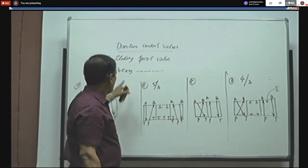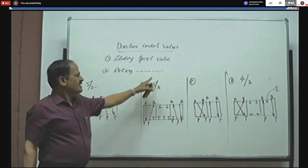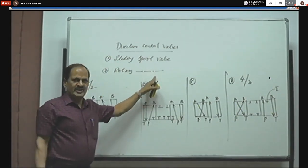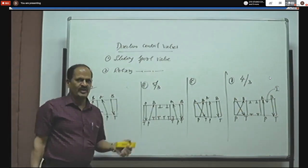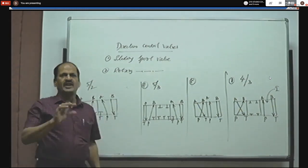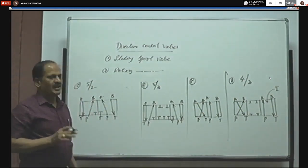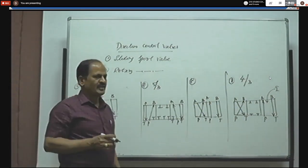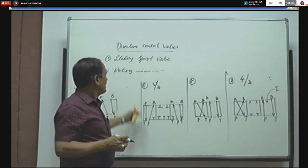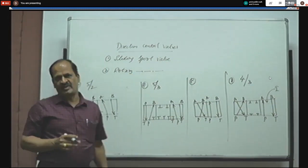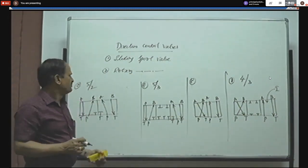In the case of a rotary spool valve, its working principle is the same as a 4x2 DC valve, but instead of using a sliding spool, a rotary rotor is used to open and close the ports. That is the only difference between the rotary spool valve and a 4x2 DC valve.